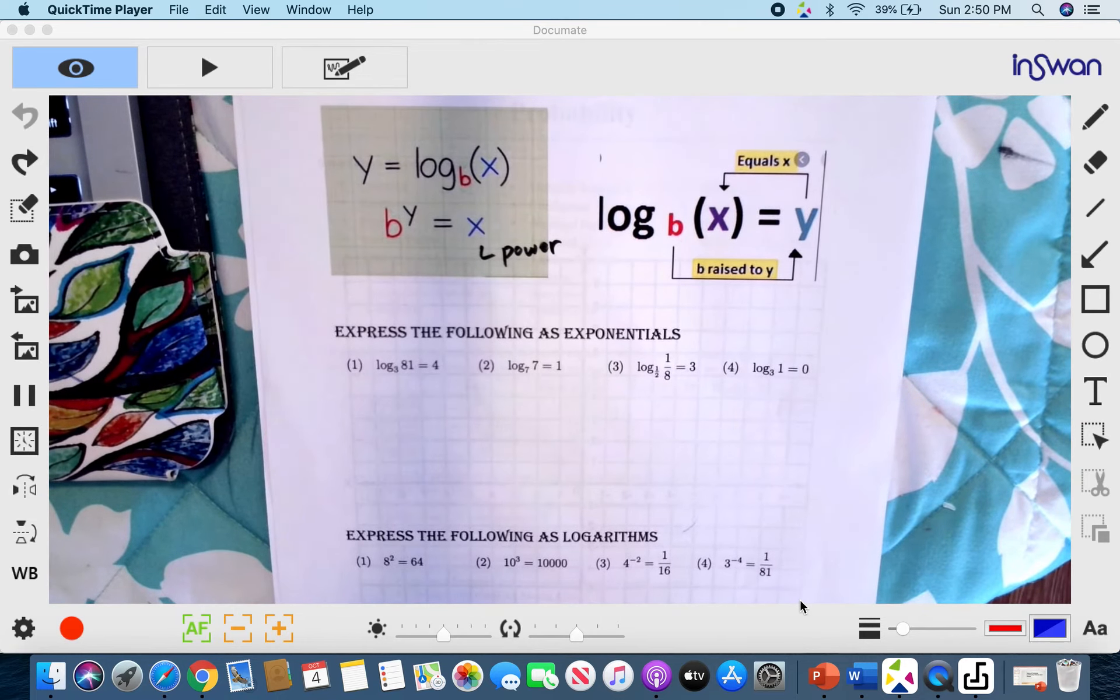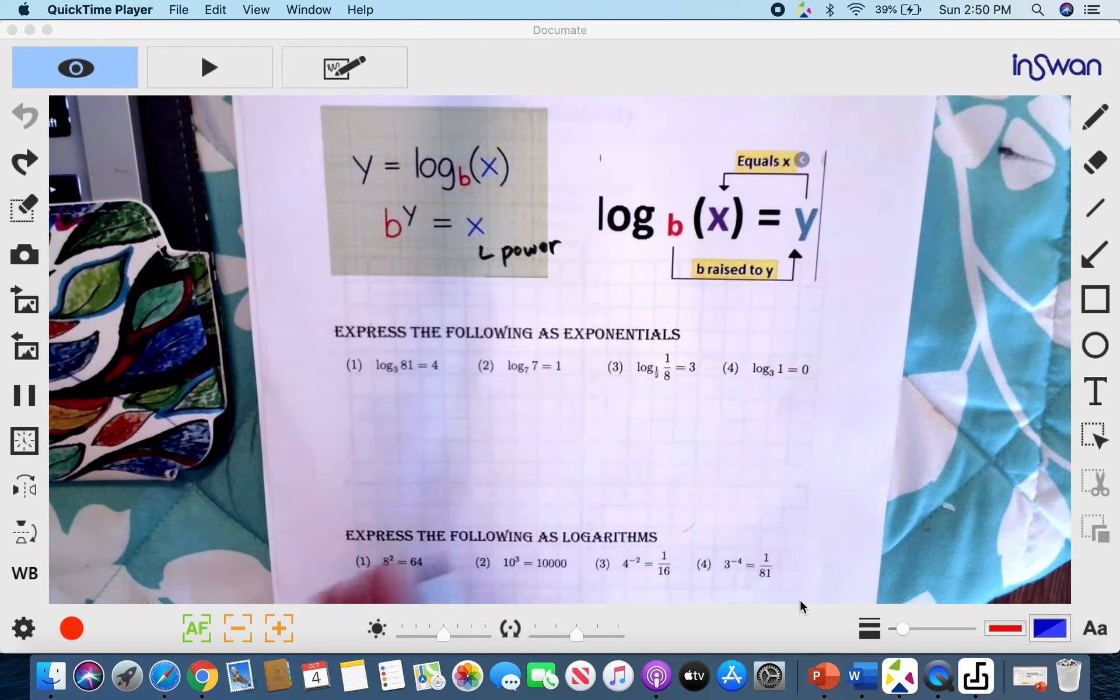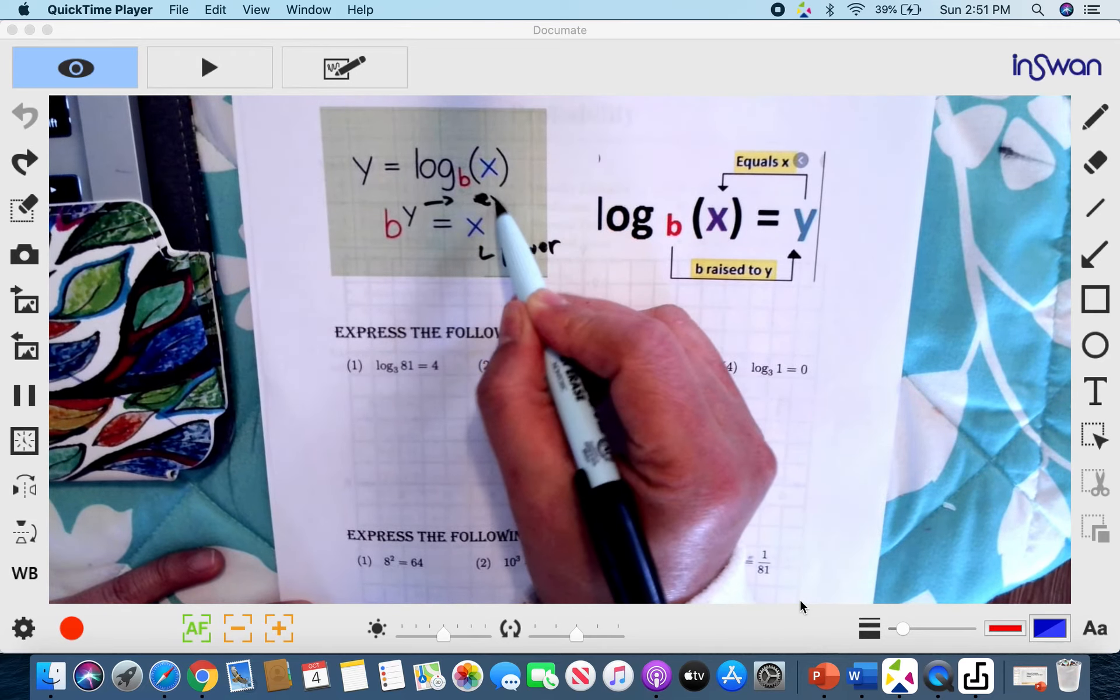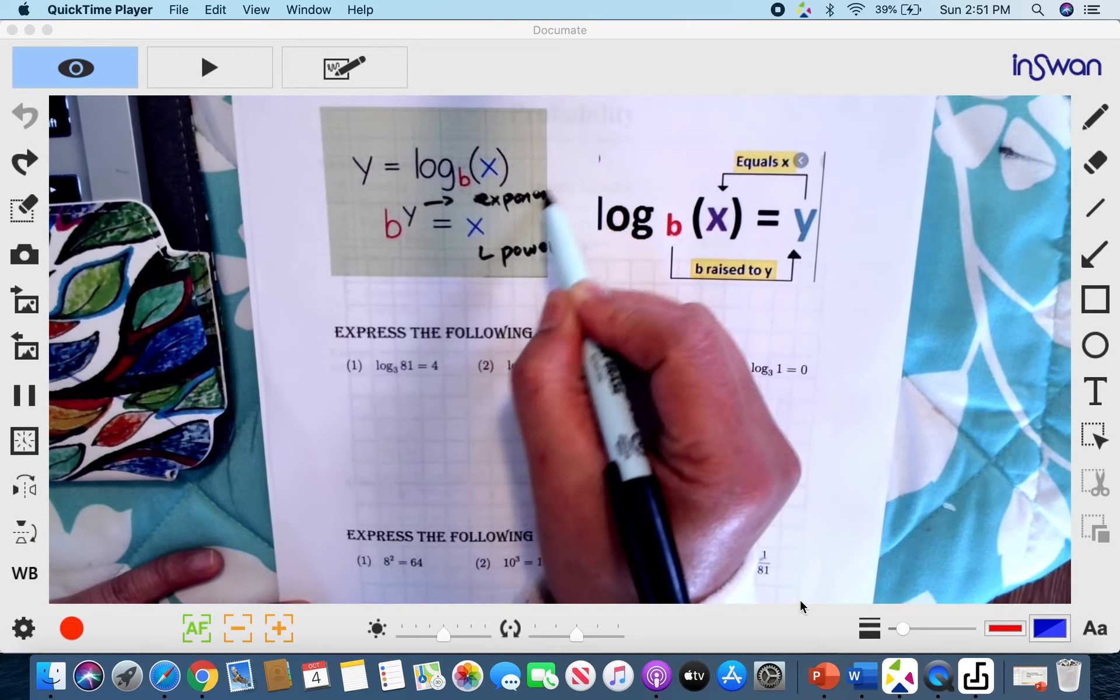Usually, they would think that the power is the exponent. No, the power is the value when you raise a base to an exponent, the value is the power. Because that's the value of the exponential expression. So therefore, it's just fitting to say that's really the power. Y is your superscript, or we also call it the exponent. We also call it the logarithm.